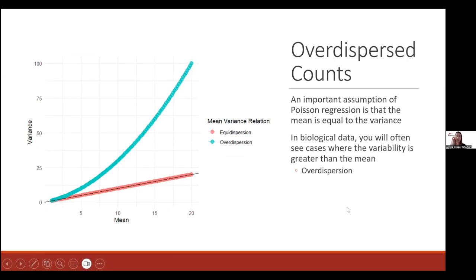With Poisson regression, we can also have overdispersed counts. The Poisson regression has the strict assumption that the mean equals the variance. But often, especially in biological data, you might see the variance exponentially grow as the mean grows larger, which we'll go over how to handle.